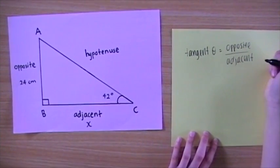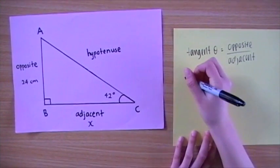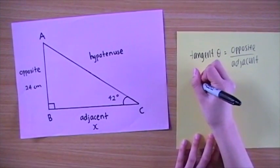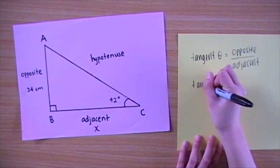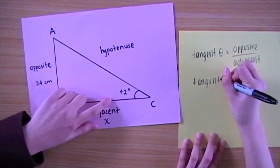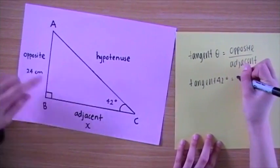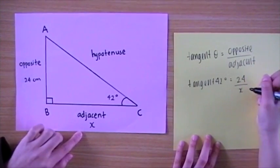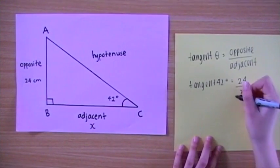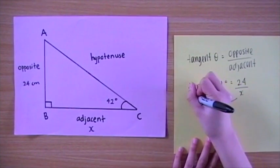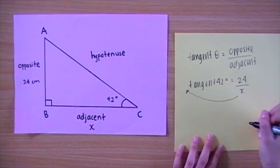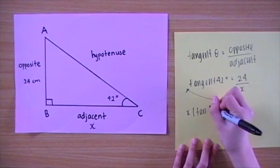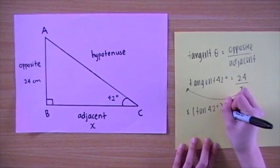To find X, we substitute our known side and X into the ratio, which is tan 42 degrees equals 24 over X. So we multiply X so that it is on the other side, giving us X times tan 42 degrees equals 24.